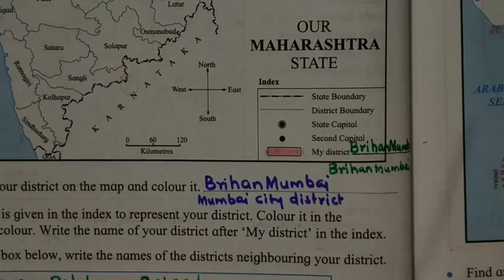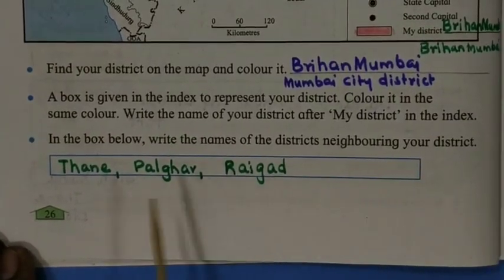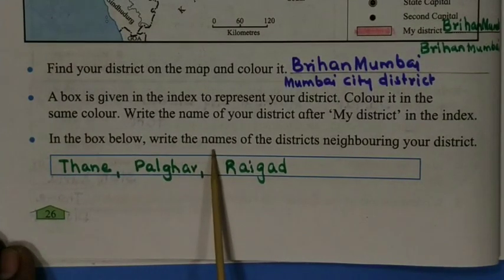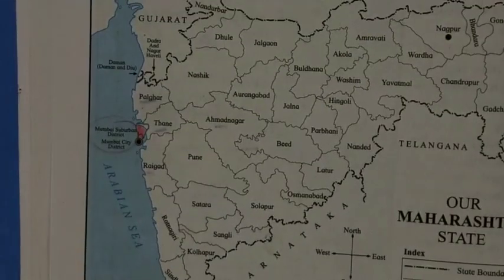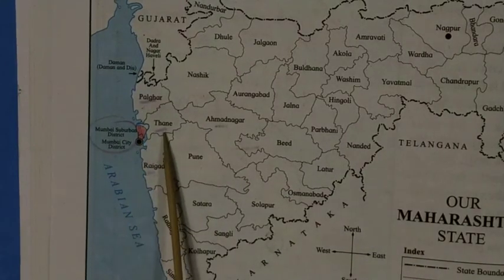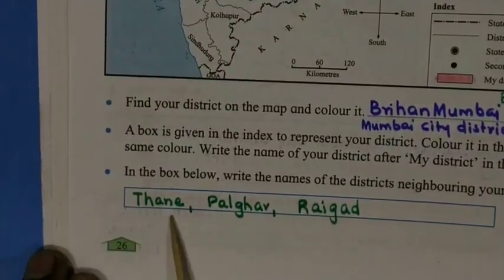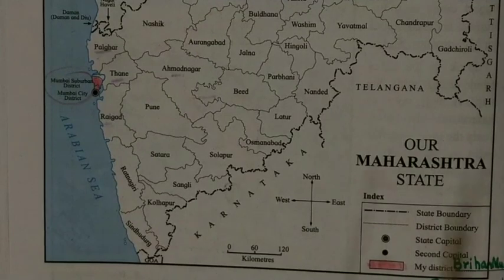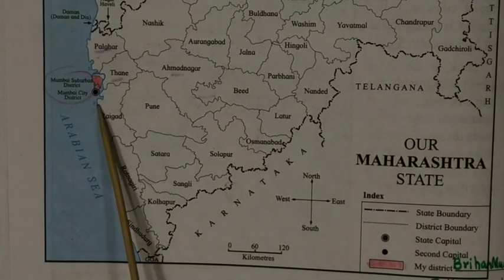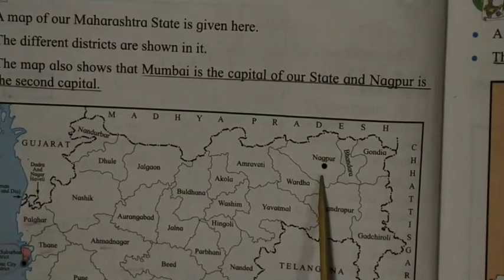Next question: write the names of the districts neighboring your district. My district is Brihanmumbai. The neighboring districts are Thane District, Palghar District to the north, and Raigad District to the south. The capital of the state is Mumbai, and the second capital is Nagpur.